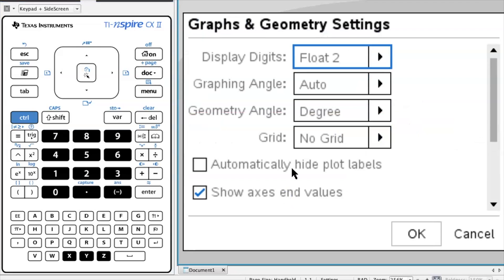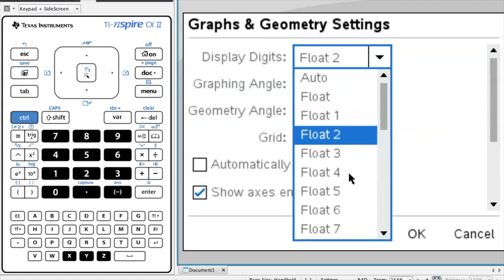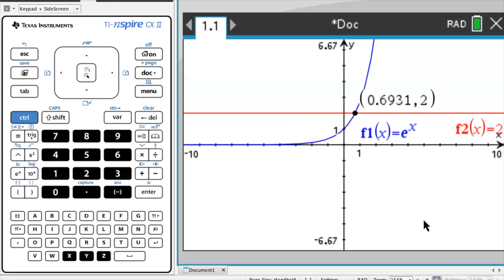So my personal recommendation is for you to keep it at Float 4 or even Float 5 because this is what would be better for as you do the examinations.